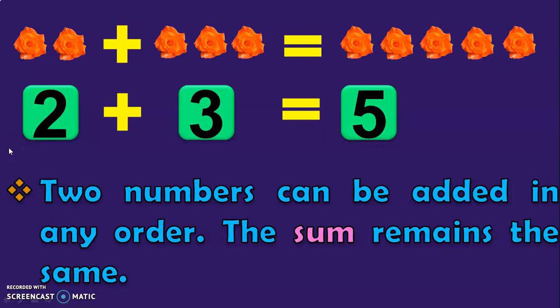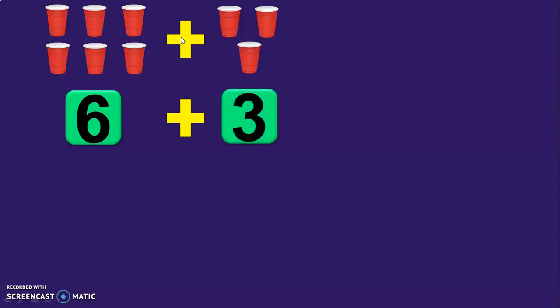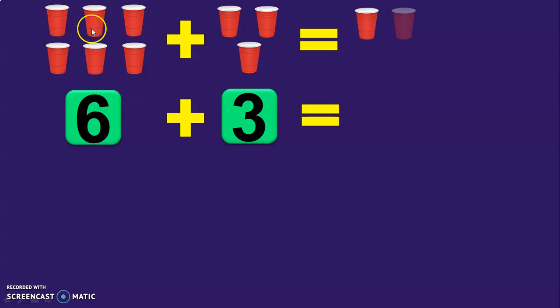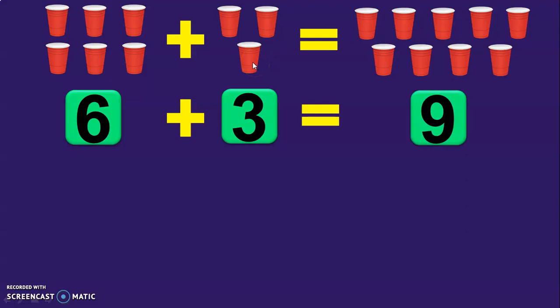Let us do one more example to understand this concept better. You have 6 tumblers with you: 1, 2, 3, 4, 5, and 6. Your friend brings in 3 more tumblers. What is the total number of tumblers you will have now? Let us count: 1, 2, 3, 4, 5, 6, 7, 8, and 9. So the total number of tumblers with you now will be 9.